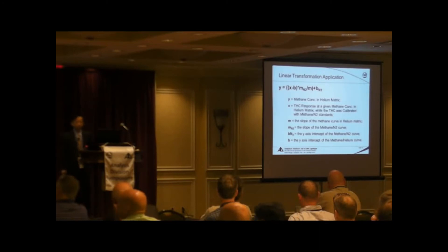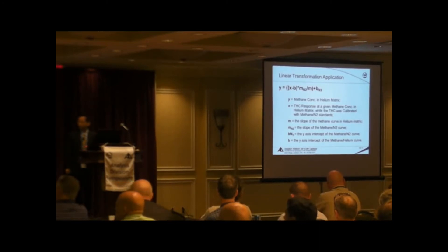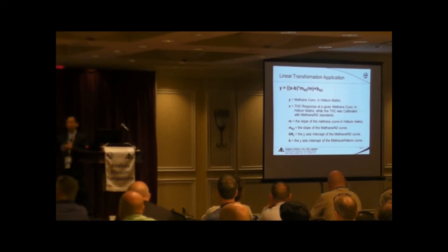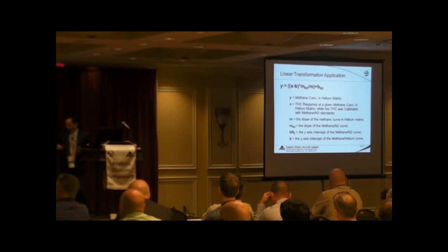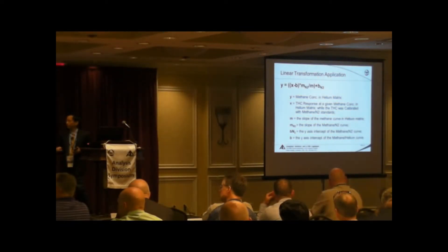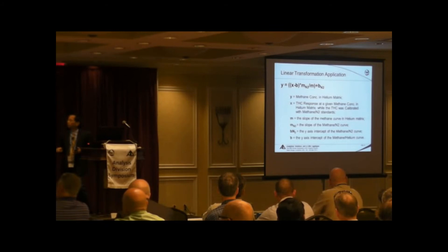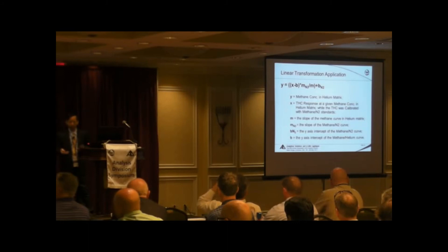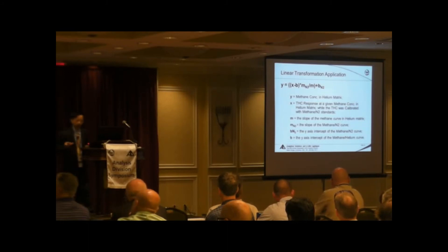That's why we propose a linear transformation. We believe if we have two curve parameters — and if we trust the calibration curves for each matrix — we should be able to transform from one calibration to the other. The formula looks a little complicated but it's very simple. The concentration Y is known for the given matrix. As long as we know the slope m and the intercept b on both curves, we should be able to do that transformation without going through the zero and span again.